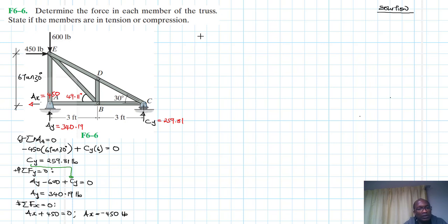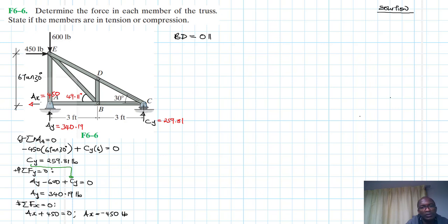Let's start by doing an inspection of the structure. At joint D, we have three truss members. Members ED and DC are collinear — they are in a straight line. Therefore, the third member, DB, is a zero force member because there is neither an applied force nor an external reaction force at joint D. So DB equals 0 pounds.